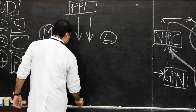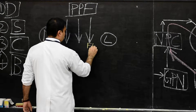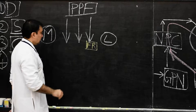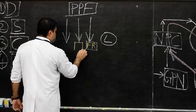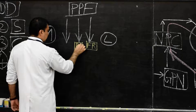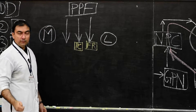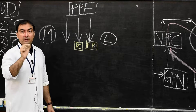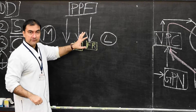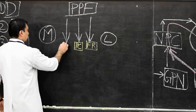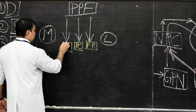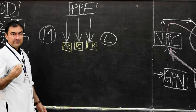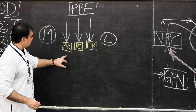The first communication will be the foramen rotundum, through which the maxillary nerve will enter. The second communication will be the pterygoid canal, through which the artery of the pterygoid canal will enter along with the nerve of the pterygoid canal — it will enter the pterygopalatine fossa. The third communication will be the palatovaginal canal.